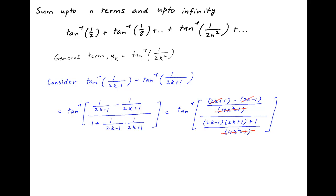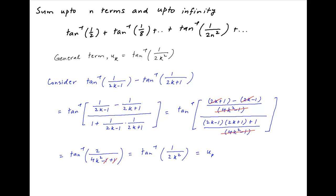This simplifies to tan inverse 2 divided by 4k square minus 1 plus 1, which in turn is equal to tan inverse 1 upon 2k square. Notice that this is equal to uk as assumed above.